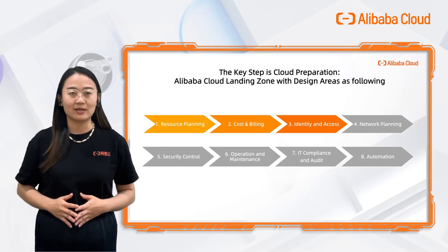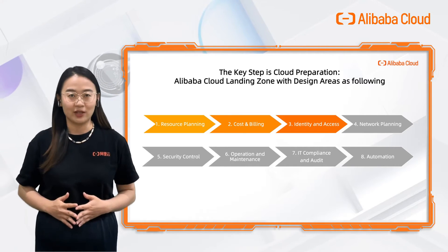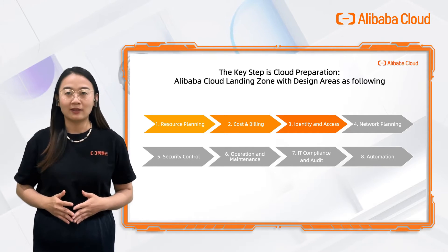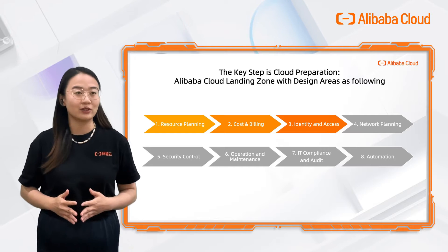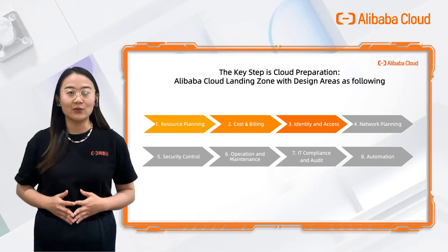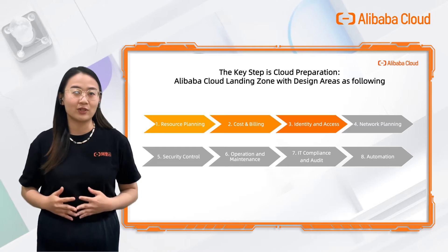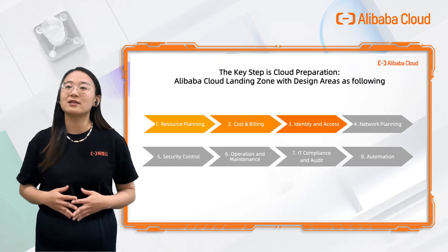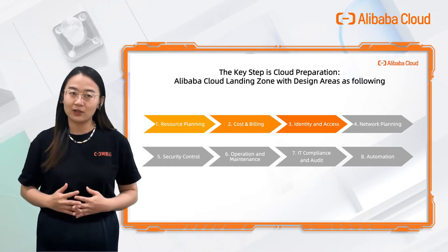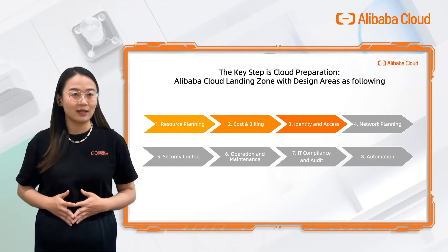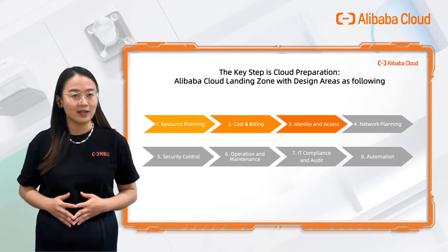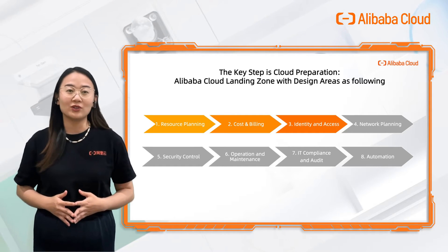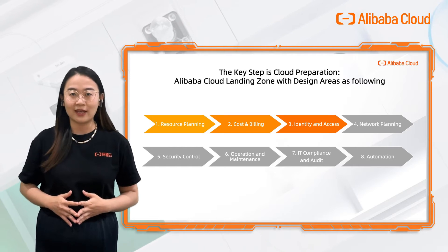Alibaba Landing Zone is not only a conceptual architecture, but also an actionable plan with defined work streams that can guide your company's path to cloud adoption. This solution includes eight design areas: resource planning, cost and billing management, identity and access control, network planning, security control, operation and maintenance, IT compliance and audits, as well as automation.